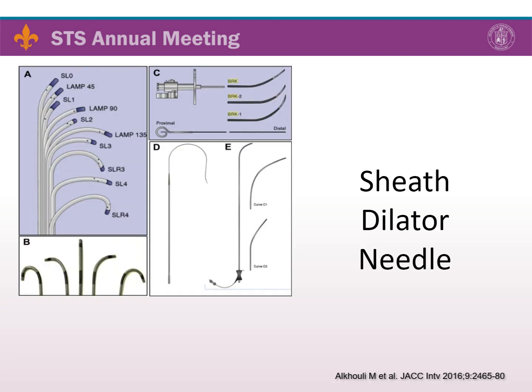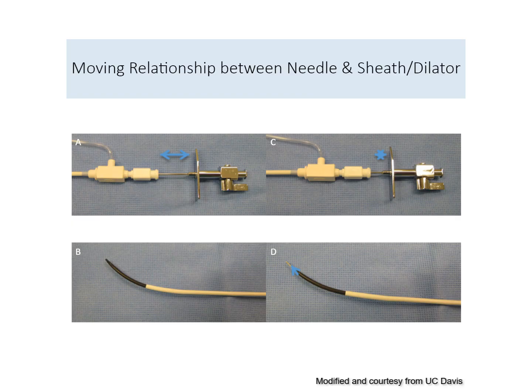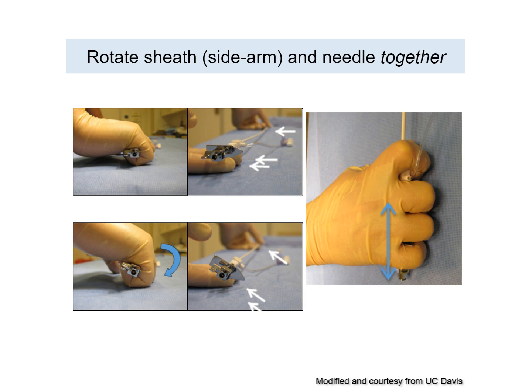Basic equipment for transseptal puncture includes the transseptal sheath, the transseptal dilator, and the transseptal needle, with multiple options available for each. In Panel A, the dilator is locked within the sheath and the needle is placed within the dilator. In Panel B, the needle is not exiting the dilator tip. In Panel C and D, the needle is advanced further, showing exit of the needle through the dilator tip. The direction of the needle can be controlled by rotating the sheath and needle together, with directionality denoted by the side arm of the sheath and the arrowhead on the back of the transseptal needle.